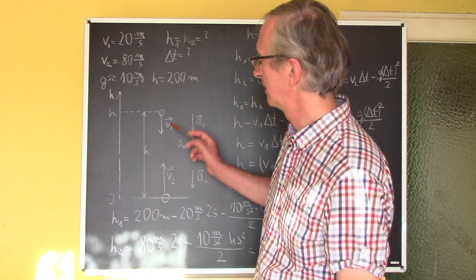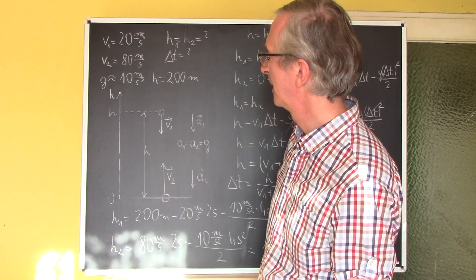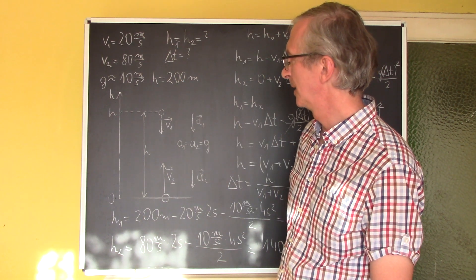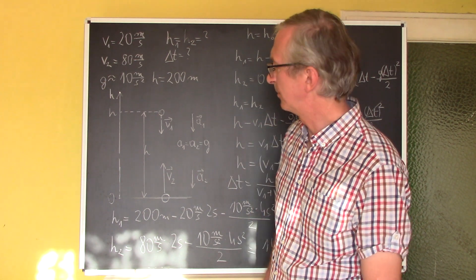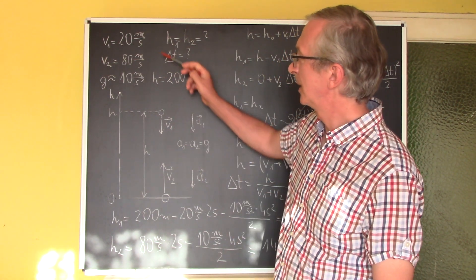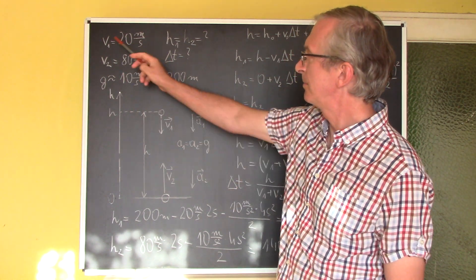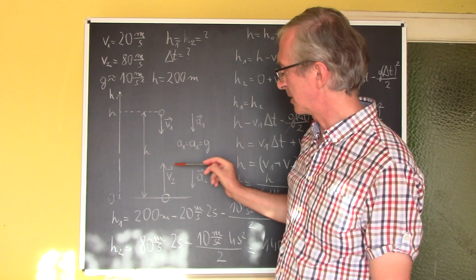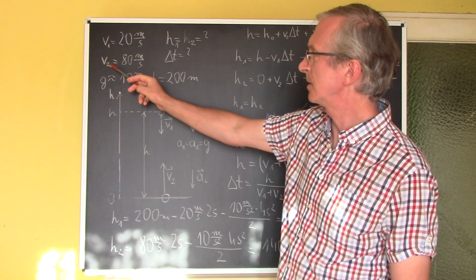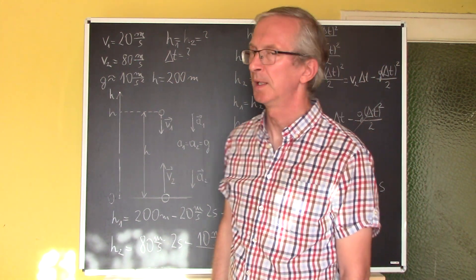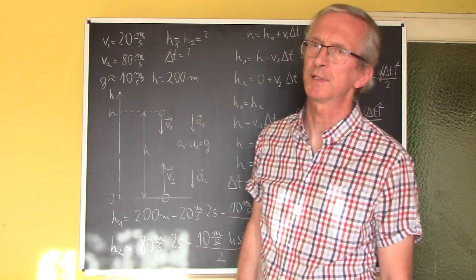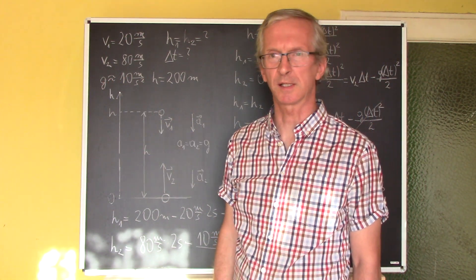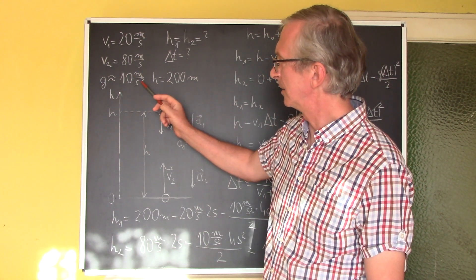So we have two balls, the first and the second. The initial distance between these balls is h equal to 200 meters, and at the same moment we throw these balls vertically. The first ball downward with velocity v1. The magnitude of these velocities is 20 meters per second, and the second ball we throw upward with velocity v2. The magnitude of this velocity is equal to 80 meters per second. To make it easier to calculate, we'll assume that gravitational acceleration g is equal to 10 meters per second squared.